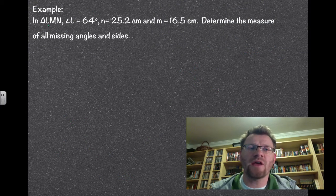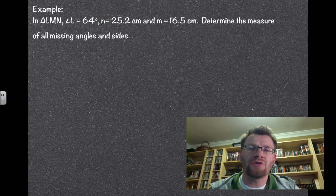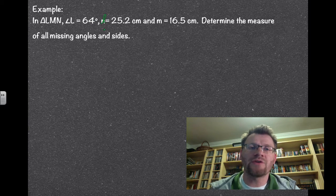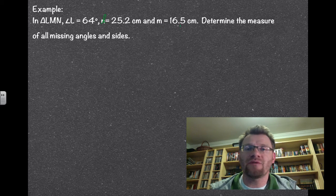So our example says, in triangle LMN, angle L is equal to 64 degrees. This should be side l, that's a typo, so you might want to change that in your notes. Side l is equal to 25.2 centimeters and side m is equal to 16.5. Determine the measure of all missing angles and sides.